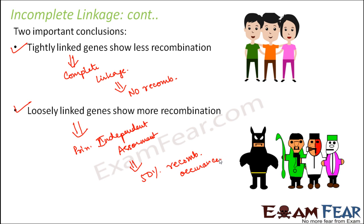For example, if a person is loosely linked, there is a possibility that the person might leave this group of friends and join some other group. When they join another group, a recombination happens because the structure of both groups changes — the group sizes change — and that is called recombination. The same concept applies to genes.